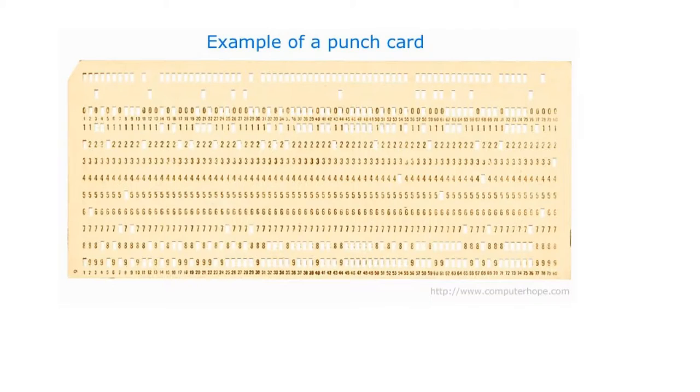Turing didn't like that, so he said each instruction should have an address of where the next instruction is to be found. When you'd written your program, you then did a sort to put the instructions in an order such that when you completed one instruction, the next one was likely to be coming out of the delay line fairly soon afterwards.